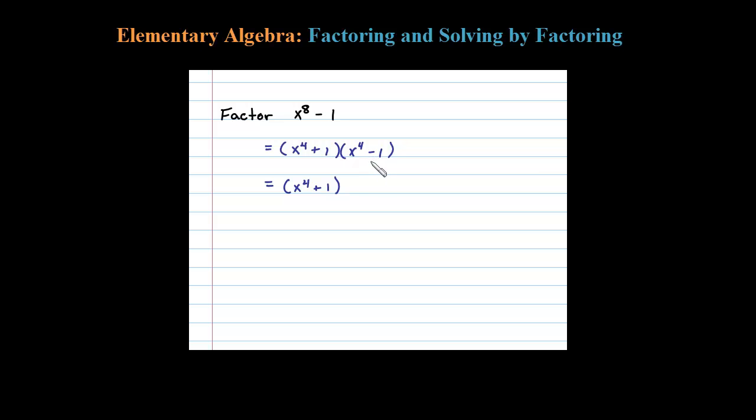So I could factor this factor further where a is x squared this time. x squared squared is x to the fourth, so you have a plus b times a minus b. Factoring this with difference of squares, I'm left with these two factors.